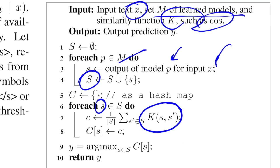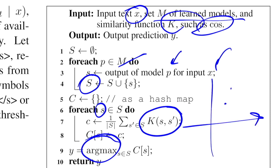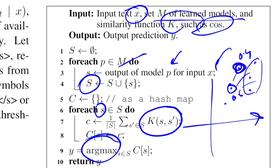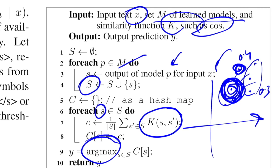For each generated summary, you calculate cosine similarity against all other summaries, and whichever summary has the highest average similarity across all others is selected via an argmax function. Visually: if summary one has average cosine similarity 0.6, summary two has 0.4, and another has 0.3, then 0.6 wins. Intuitively, this captures the central theme present across all summaries — that's why the algorithm works.